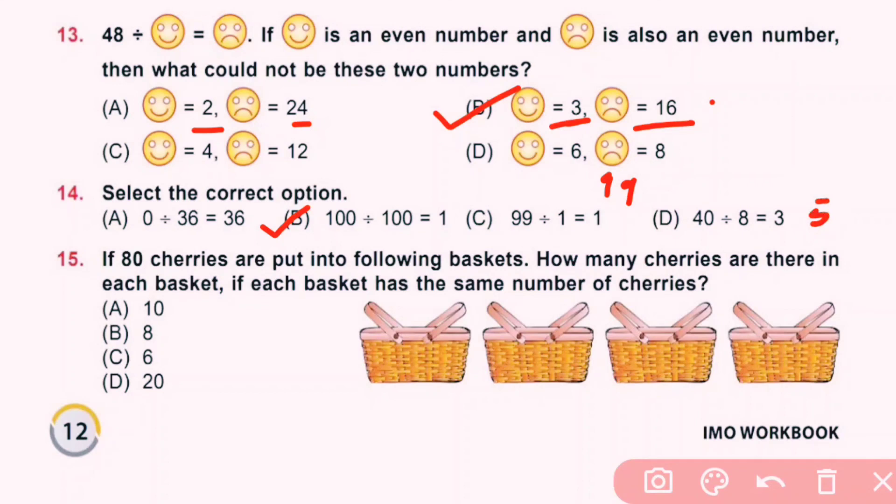Question number 15: If 80 cherries are put into following baskets, how many cherries are there in each basket if the basket has same number of cherries? Total cherries are 80. How many baskets are there? 4 baskets. So we have 80 divided by 4. 4 twos are 8 and 0, and half is 0. So each basket contains 20 cherries. So here D is correct answer.